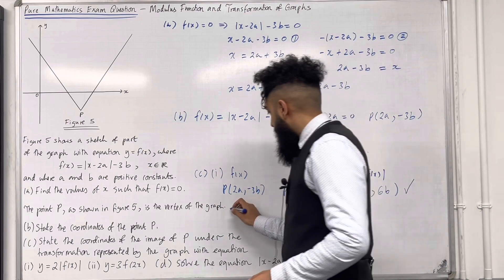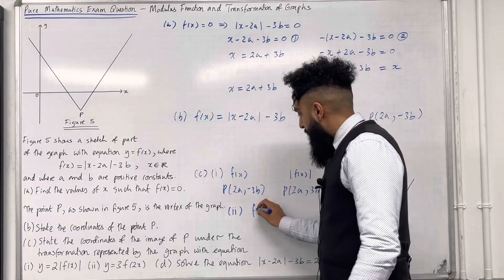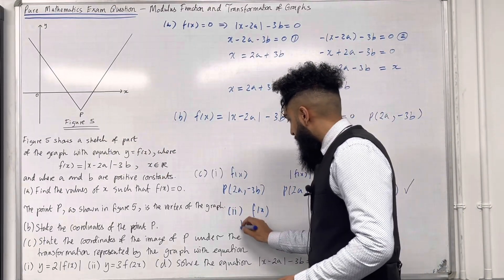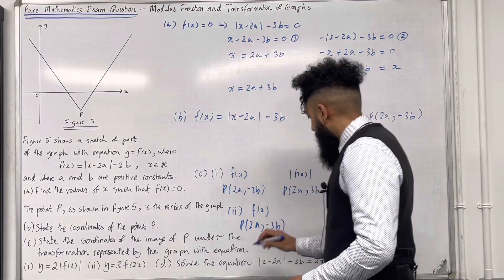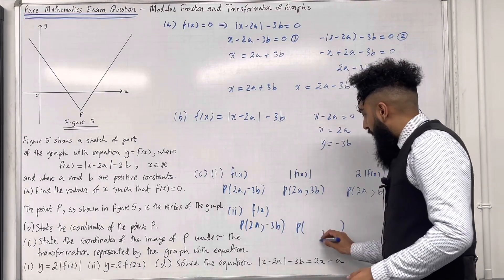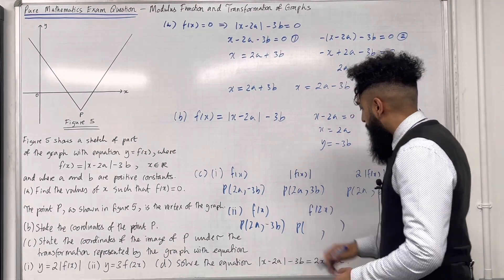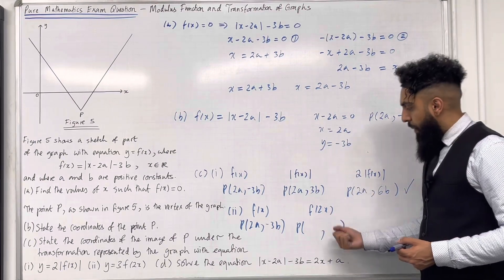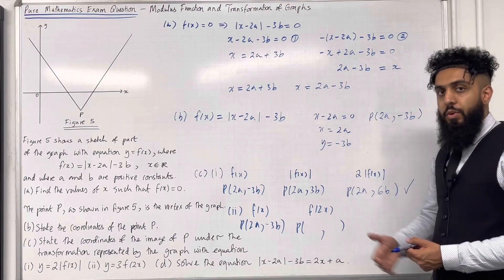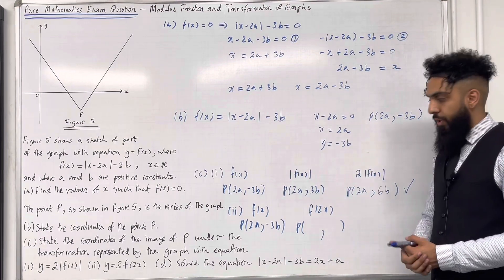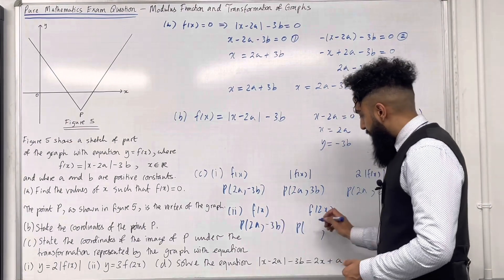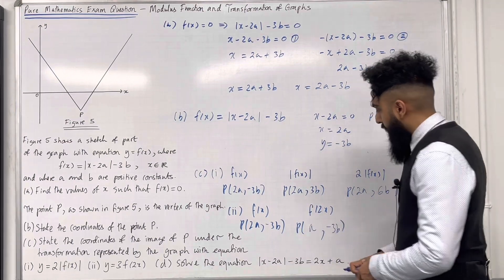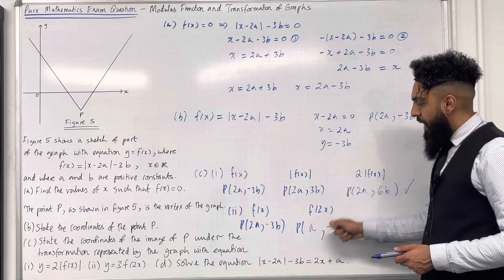Moving on to part 2. We have f(x) with vertex P at (2a, −3b). For the transformation f(2x), we apply the bracket first. Since we have 2x inside the bracket, we do the opposite and divide the x-coordinate by 2: 2a ÷ 2 = a, keeping the y-coordinate as −3b. So the image of P under f(2x) is (a, −3b).